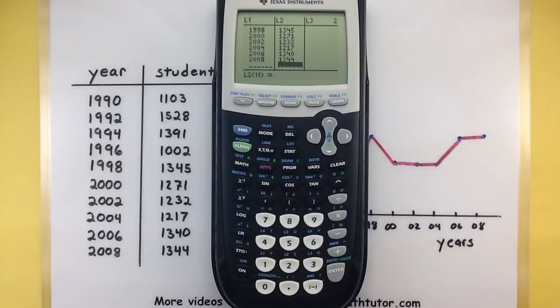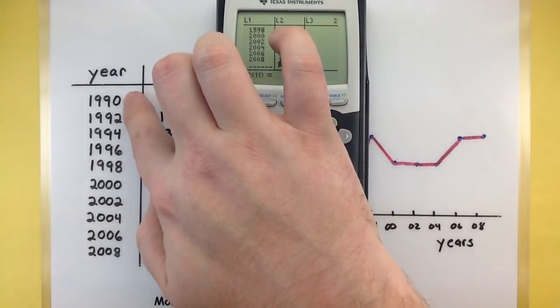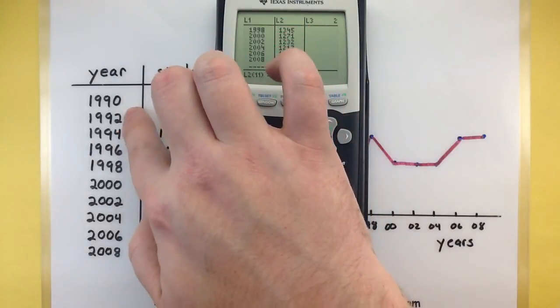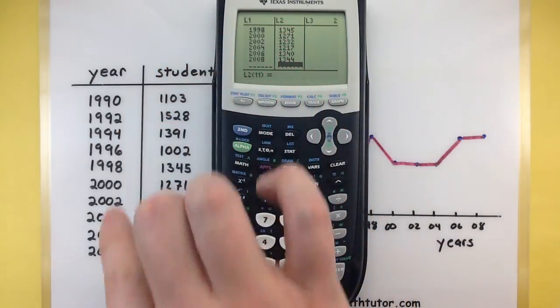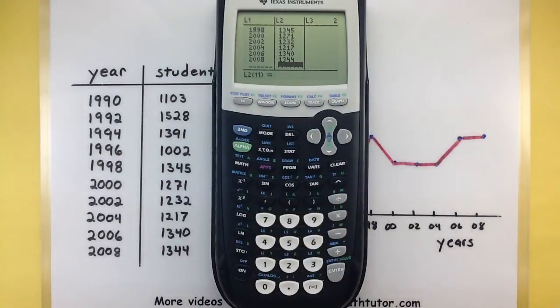Now another good thing to note is since we are making a line chart we want to make sure that the data is organized how we want the dots to all be connected. When the graphing calculator goes to connect the dots it'll connect the first data value to the second one, the second one to the third one, the third one to the fourth one. That's also a really good reason why we want all of our years ordered from smallest to largest because that's exactly how it's going to connect things.